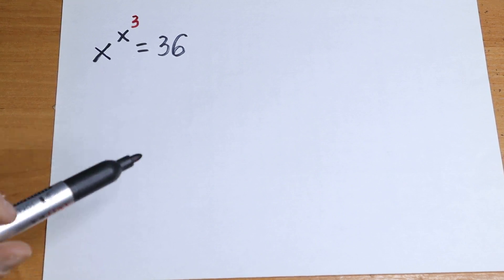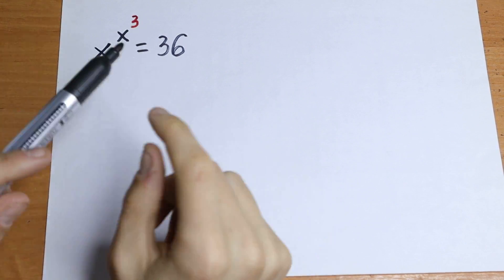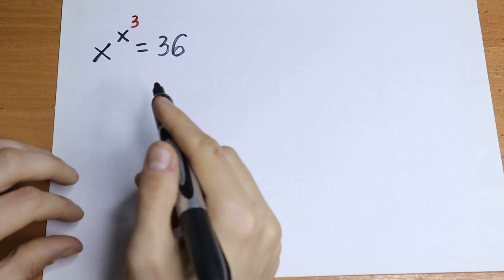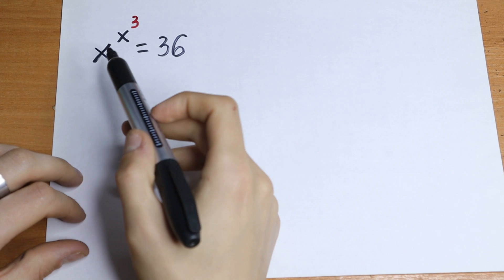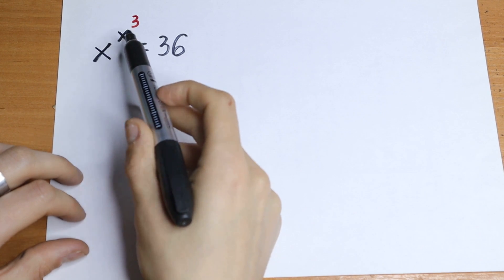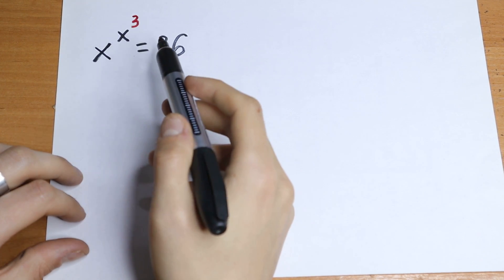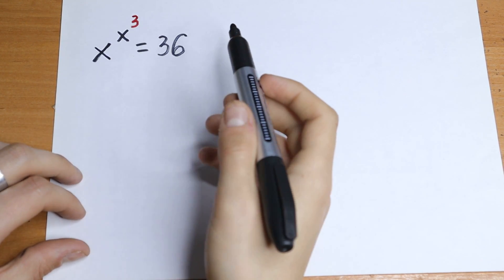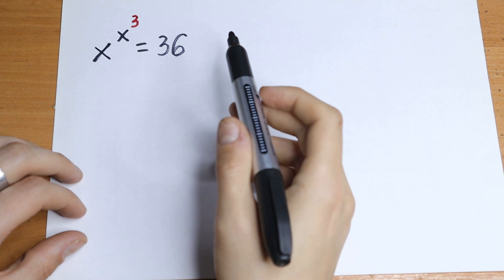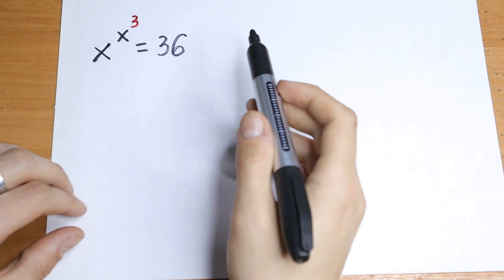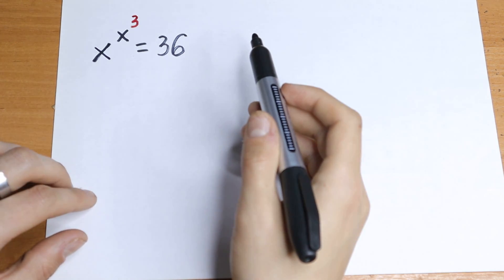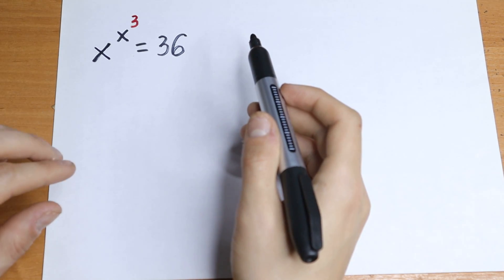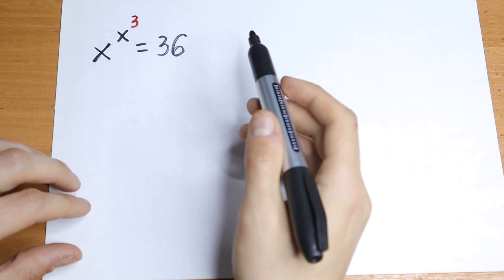Hello everyone, welcome back to MathMood. Here we have an interesting exponential equation: x to the power x to the third power equals 36. If you know an answer, if you feel an answer, write your answer in the comment.